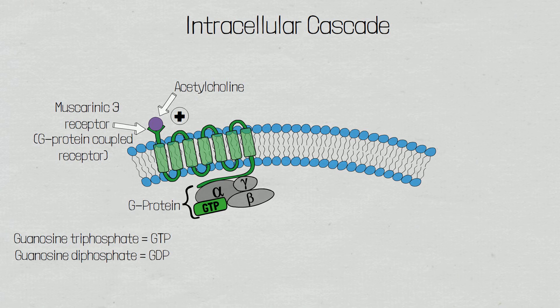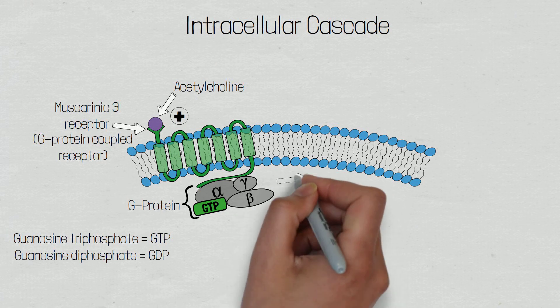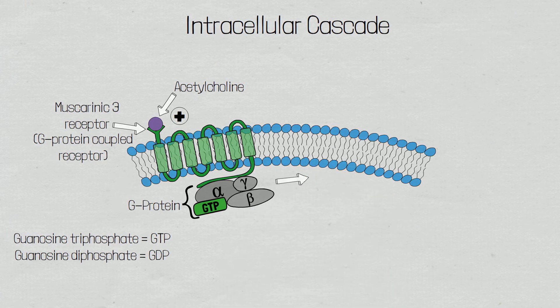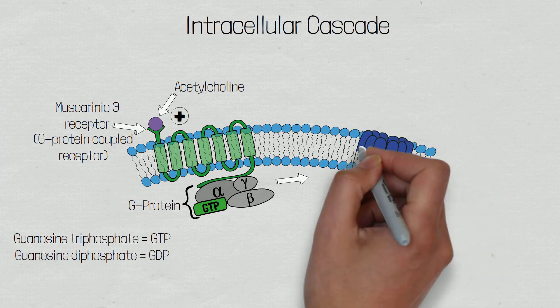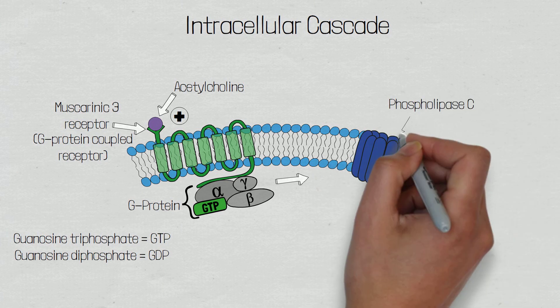This conformational change will cause the G-Q protein to detach from the guanosine diphosphate and bind guanosine triphosphate. The G-protein is now active and the alpha subunit will now dissociate from the beta and gamma subunits and will bind to and activate a membrane-bound protein called phospholipase C.